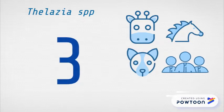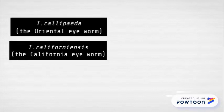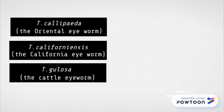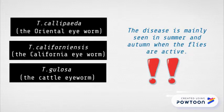There are three species that have been involved in human infection. First, Thelazia calipedia, also known as the oriental eye worm. Thelazia californiensis, also known as the California eye worm. And Thelazia gulosa, also known as the cattle eye worm. Thelazia species is mainly seen in summer and autumn when the fly, as the vector, is active.